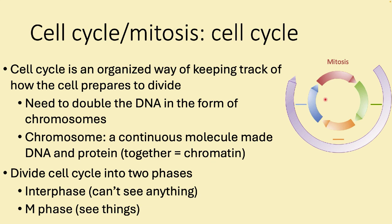We divide the cell cycle into two distinct parts. Interphase is the big loopy part where I don't see anything going on, and M phase is where stuff does occur. Within interphase we label parts: G1 meaning growth, S for synthesizing DNA, and then G2 for growth 2. We'll talk about what each of those does in a moment.